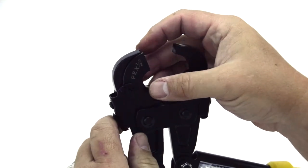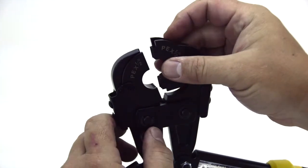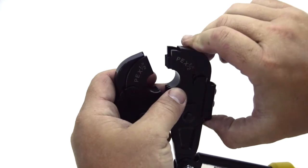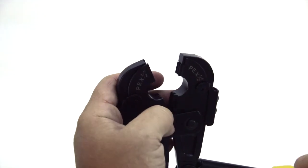Changing the jaws on an Apollo PEX multi-head crimp tool is an easy process. Select the appropriately sized set of crimping jaws, slide the spring-loaded latch up while positioning the crimping head in place, and release the latch.